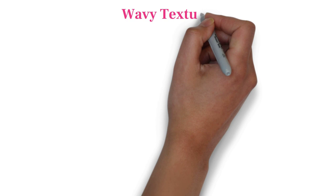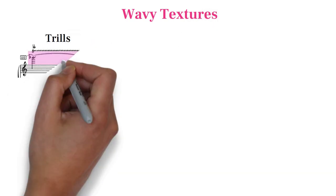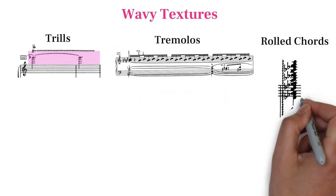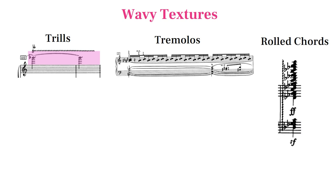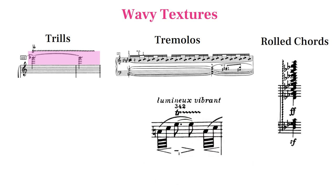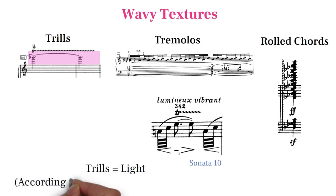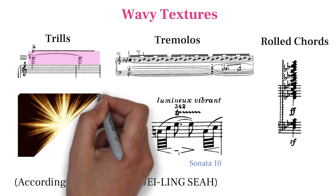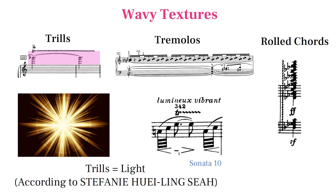Another characteristic feature of Scriabin's textures is the frequent use of trills, tremolos, and rolled chords. Some speculate that Scriabin uses trills to represent light, which seems applicable to Sonata X and Ver la Flemme.